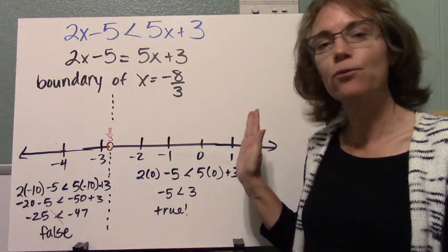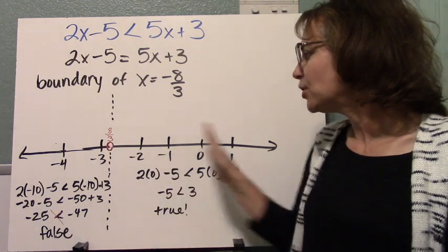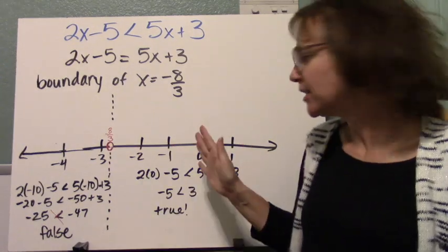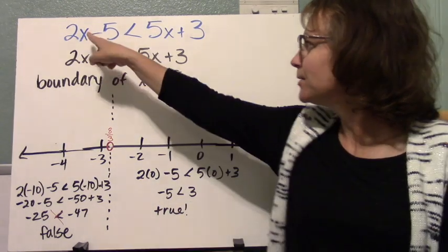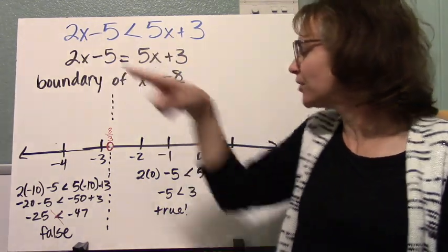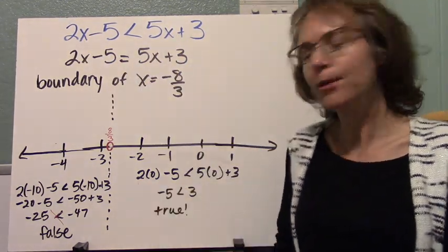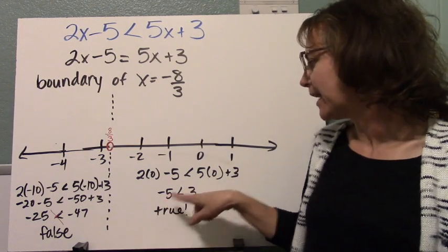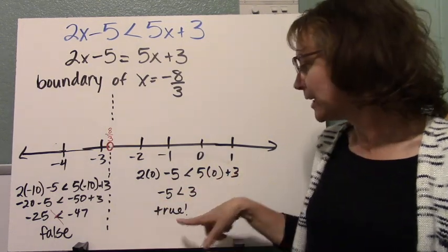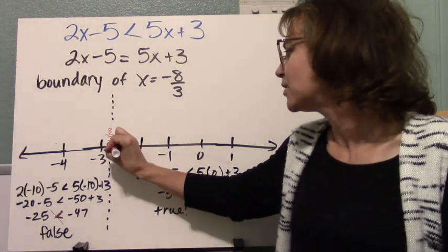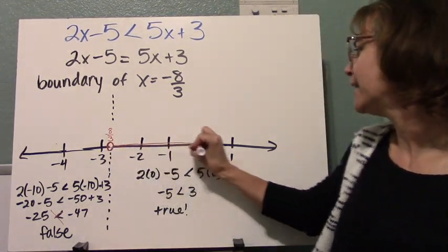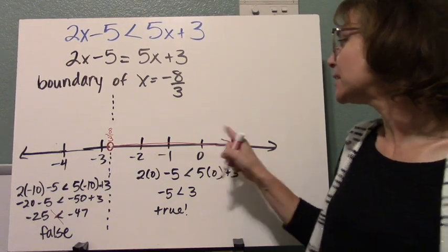Now I want to test a point to the right side on the number line. And you can choose any of these points in here to test. I chose 0, it's easy to multiply. So 2 times 0, substituting into the original inequality. 2 times 0 minus 5 is negative 5. 5 times 0 plus 3 is 3, and I found this is true. And I expected that, but I wanted to test that. So I know this side is going to be the solution.